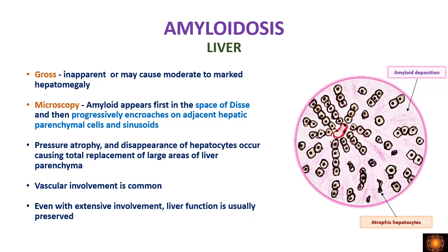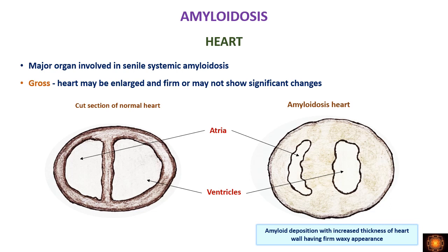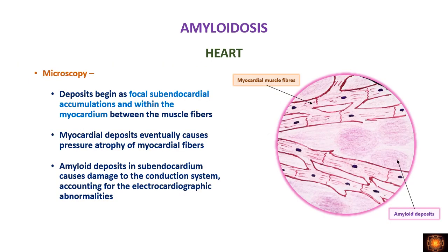When we see the heart, it is usually asymptomatic or the organ is normal or enlarged. Amyloid deposition thickens the wall of the heart, and the cut section is waxy. As wall thickness increases the lumen of the heart chambers decreases. Deposits occur either as subendocardial accumulations or within the myocardium. Myocardial deposition causes pressure atrophy and destruction of muscle; subendocardial deposition causes damage to the conduction system, leading to ECG abnormalities.